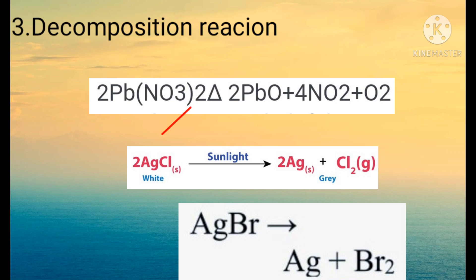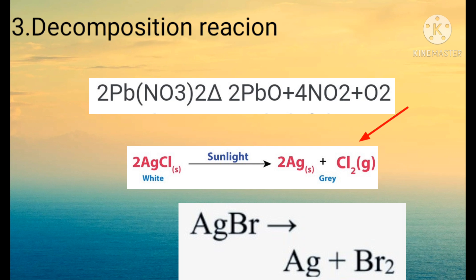Other examples are the breaking down of silver chloride and silver bromide. Silver chloride breaks to form silver and chlorine gas Cl2, which is green in colour. Decomposition of silver bromide gives silver and bromine gas, which is brown in colour. For decomposition reactions, heat energy or light energy is required. Without this energy, decomposition reaction does not proceed.